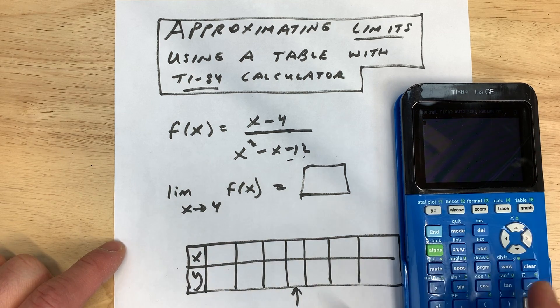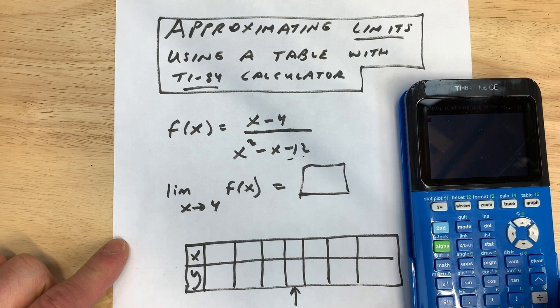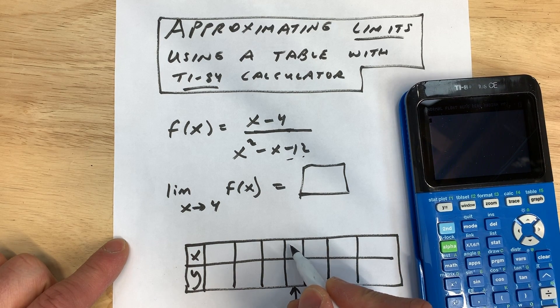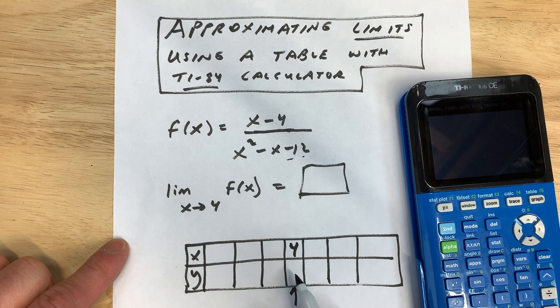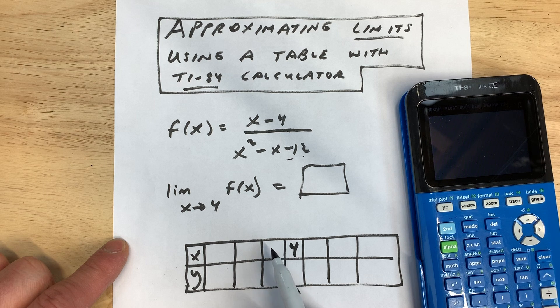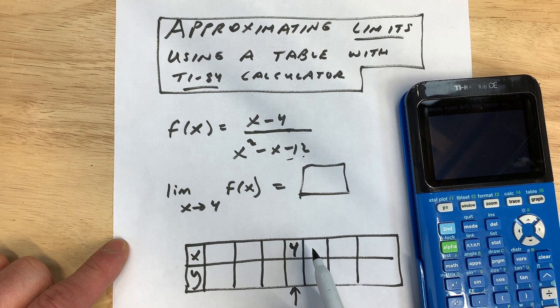Now when you do the table method, I'm going to show you on the graphing calculator how to do it, but just to show you here on paper: you're approaching this x value of 4 and you're trying to see what it gets closer to as you approach 4 from below and from above—meaning a little bit lower than 4 and a little bit higher than 4.